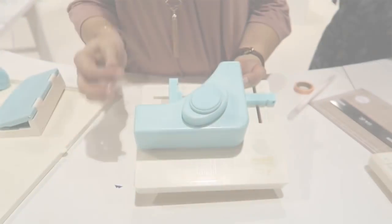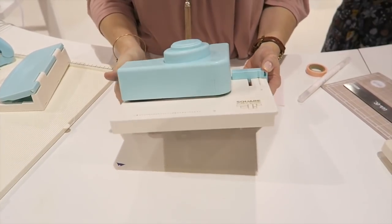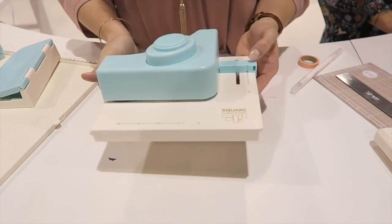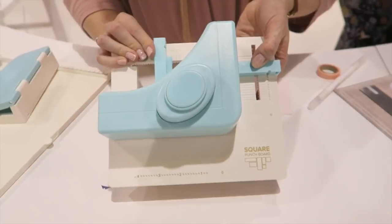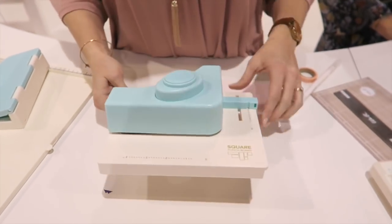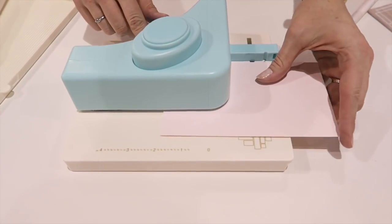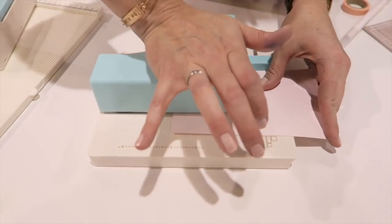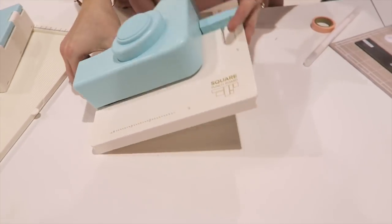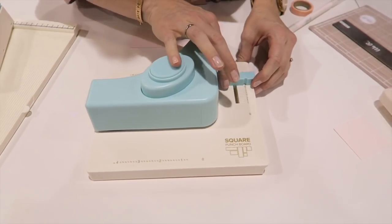This is our square punchboard. If you like to make tags or cards or you like to do planners, this is a great tool. So let's say I want to make a two by two square. I'm just going to move my guides to two inches and then slide my paper in and it stops right here on this guide so that you know exactly where you need to place it. And then you punch and you've got a two inch square.